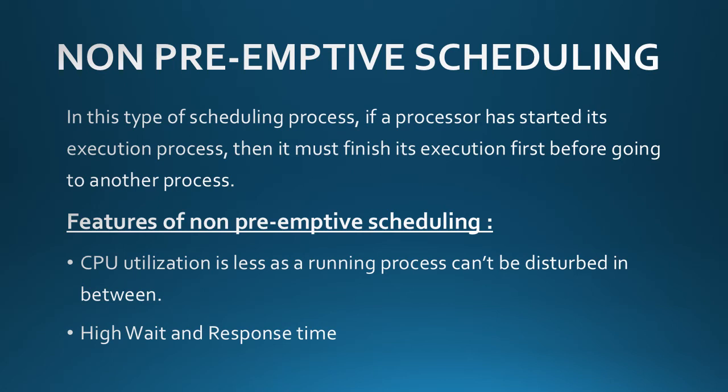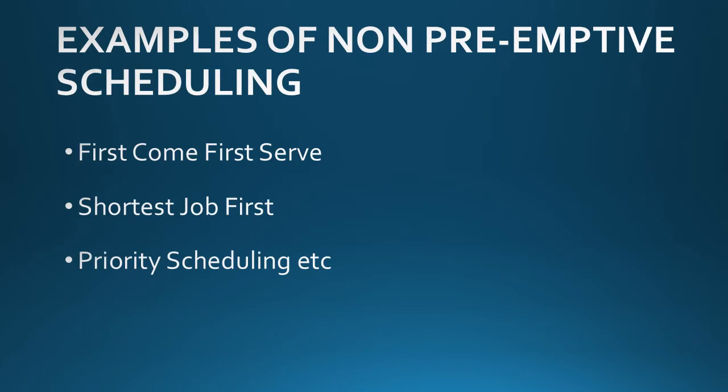Features of non-pre-emptive scheduling: CPU utilization is quite low because the running process cannot be disturbed — we must finish it first. Wait and response time is high. Examples of non-pre-emptive scheduling are First Come First Serve (FCFS), Shortest Job First (SJF), and Priority Scheduling.